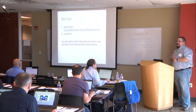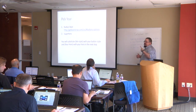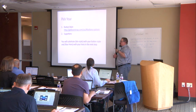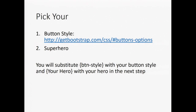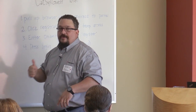All right, the next step here — we've got to make two choices, this is a personal choice. You need to pick a button style. Your choices are primary, success, warning, and info — basically what color do you want your button to be. I'm using default Bootstrap styles. If you go to that URL you'll actually see a list of options. The other thing you've got to pick is your superhero — figure out in your mind who your favorite superhero is.